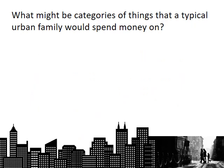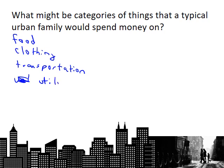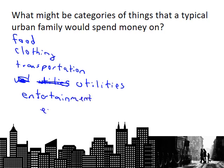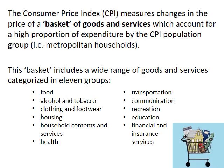Categories that a typical family would spend money on include food, clothing, transportation, utilities such as electricity and heat, and entertainment, among others. The CPI measures changes in the price of this basket of goods and services, which account for a high proportion of expenditure by the CPI population group — the metropolitan households. This basket can include a wide range of goods and services, but they are categorized into 11 groups including food, clothing, footwear, housing, and recreation.